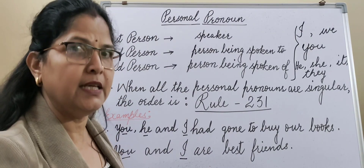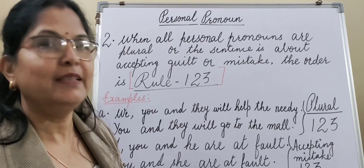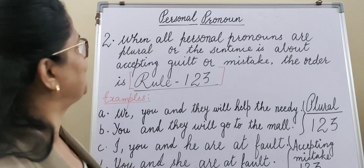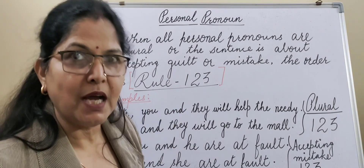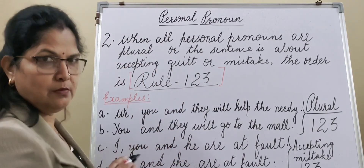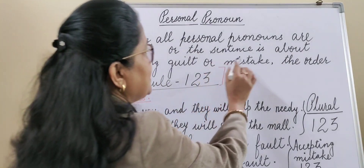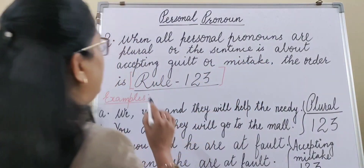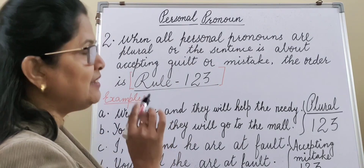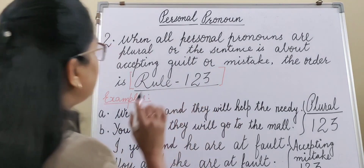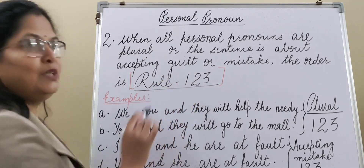I hope this is clear. Now let's move to the next concept. When all personal pronouns are plural — keep in mind, plural — or when the sentence is about accepting guilt or a mistake, in that condition, the order of the pronoun will be Rule 123.